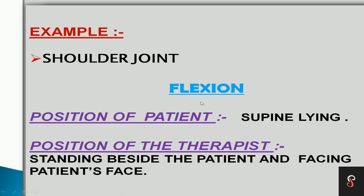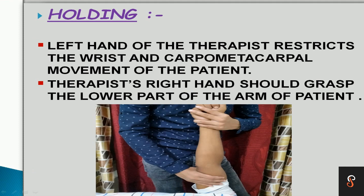Taking the example of shoulder flexion: the patient is positioned in supine lying. The therapist is seated facing the patient. For the handholds, the therapist restricts the right hand at the patient's wrist, and the lower part of the arm is also held by the therapist.